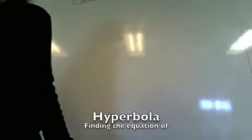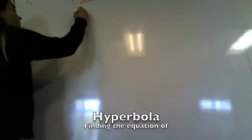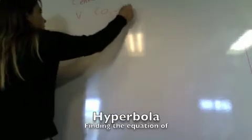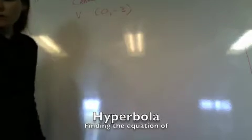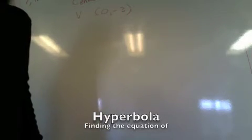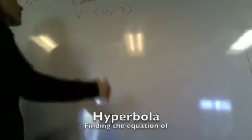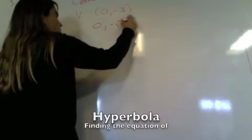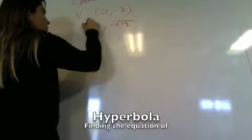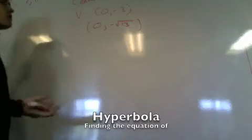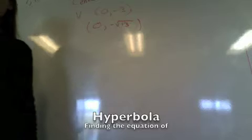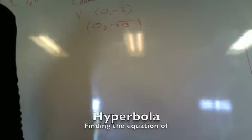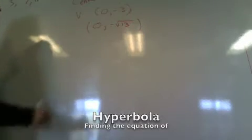And a vertex at (0, -3), and then we have the focus at (0, -√13). Alright, so let's do a rough sketch of this. This is us doing a hyperbola — we're finding the equation for a hyperbola.